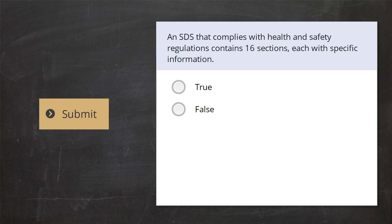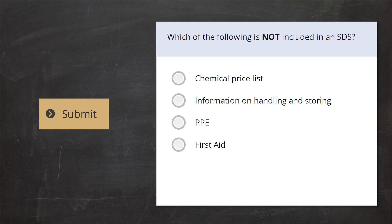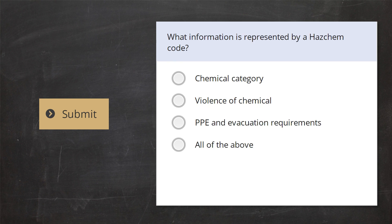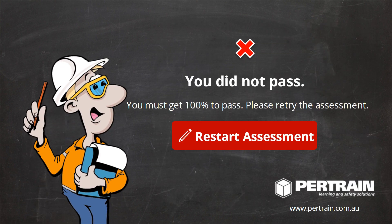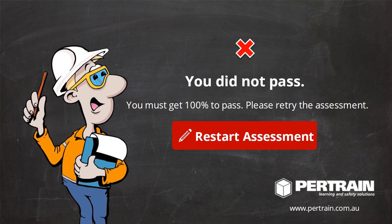Select true or false. Which of the following is not included in an SDS? What information is represented by a HASChem code? SDS is only relevant to chemicals on a work site — select true or false. You must get 100% to pass this module.